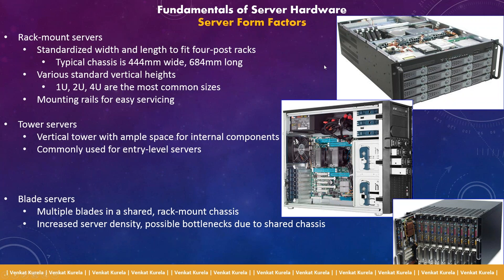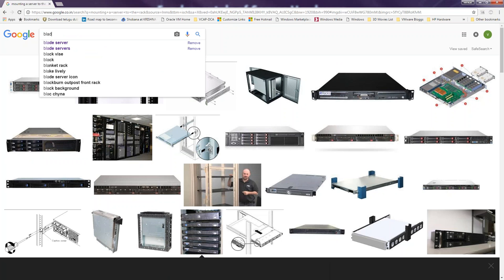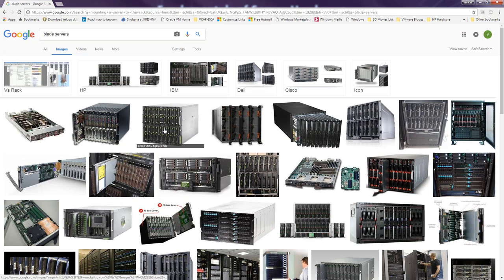A traditional rack-mountable server is available in 4U height — close to 10 inches. The next evolution was blade servers, designed to overcome the challenges of rack-mountable servers. Rack-mountable servers take a lot of space, have dedicated components, consume a lot of power, generate a lot of heat, and require more air filters and cooling units. To overcome those challenges, the industry moved to blade systems. Let's see how it looks. This is called a blade system — this is an HP C7000 chassis.